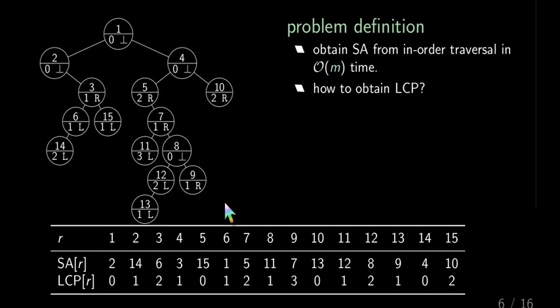So our problem definition is given this tree, how can we compute the LCP array? For the suffix array, it's actually easy by doing an in-order traversal, which can be conducted in time linear to the number of nodes. So you start at the root and then you find 2, 2 has no left child, so you report 2, then descend 14, 6, 3, 15. Then go up, report 1, and then recursively descend on the right subtree of 1.